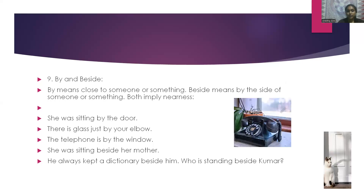The next words are 'by' and 'beside'. By means close to someone or something. Beside means by the side of someone or something. Both imply nearness. For example: she was sitting by the door. There is a glass just by our elbow. The telephone is by the window. She was sitting beside her mother. He always kept a dictionary beside him.